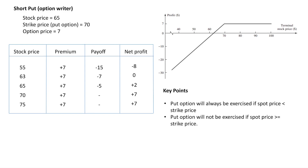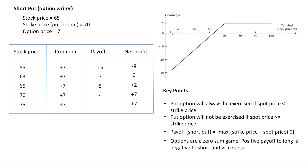Now let's talk about key points. Put option will always be exercised if spot price is less than strike price. Put option will not be exercised if spot price is greater than or equal to strike price. The payoff formula for the short put is: minus of max(strike price minus spot price, 0). Options are a zero-sum game — positive payoff to long is negative to short and vice versa. You can clearly notice in the long put and short put tables that net profit positive to long is a loss to short. Premium is paid by the holder and received by the writer.